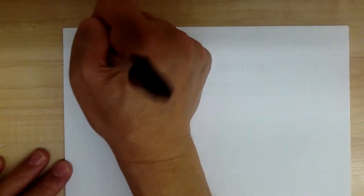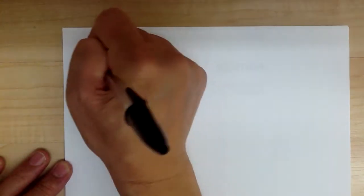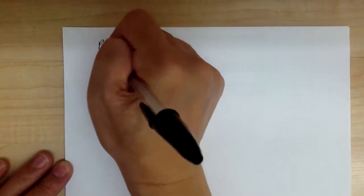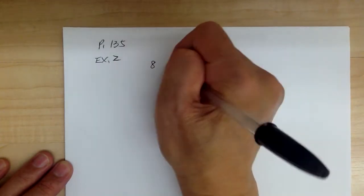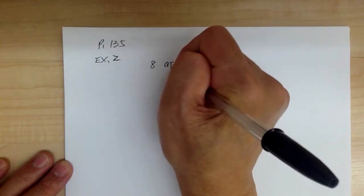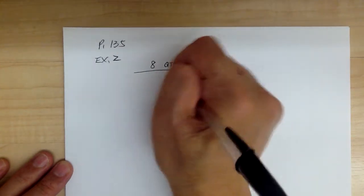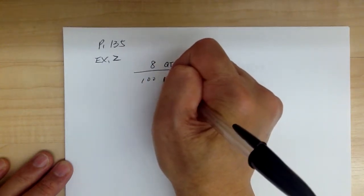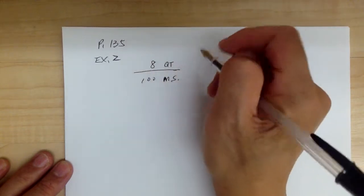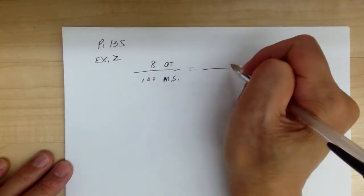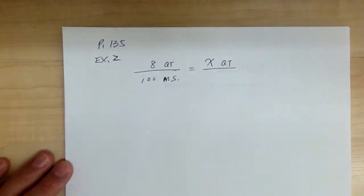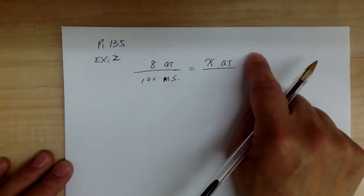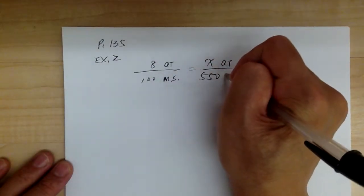Let's go to example 2. At a soda fountain, 8 quarts of ice cream was used to make 100 milkshakes — I'm going to use MS for milkshakes. And it says how many quarts? Just note the label: quarts. How many quarts are needed to make 550 milkshakes?